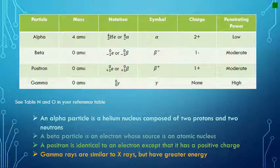These are the particles that can be emitted from nuclei: there are alpha, beta, and gamma particles, and also positrons. Refer to tables N and O in your reference sheet for more info on that. Pause if you need to and look at the properties of these particles.